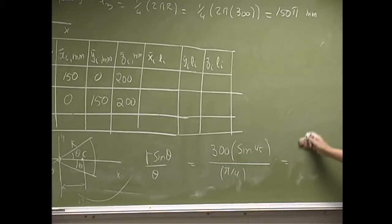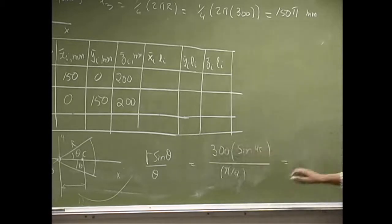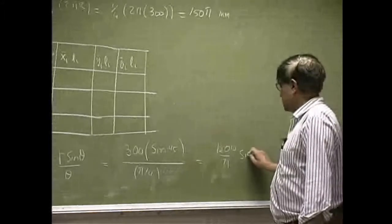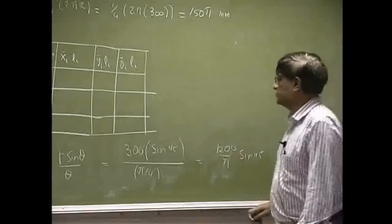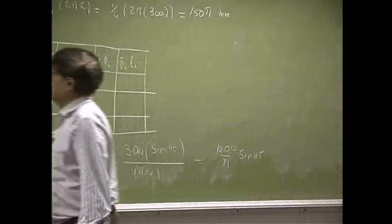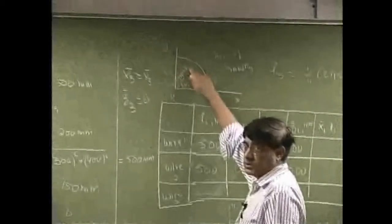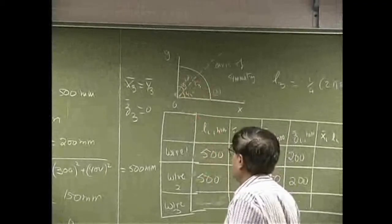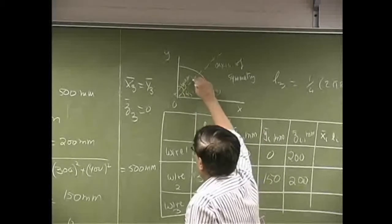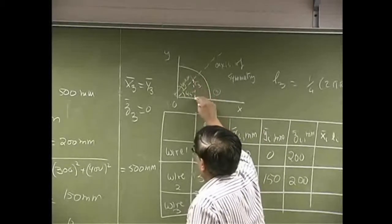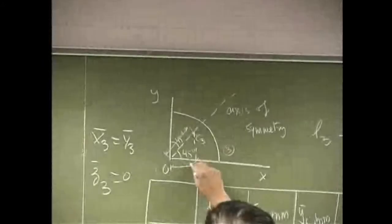That's going to be 4. I can multiply this with this, you get 1200 over pi sine 45. Now that's not the coordinates, that's this distance. So to find coordinates you need to drop a perpendicular.